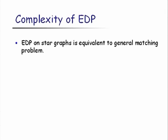There is a long and rich history of results on this problem. Let me review some classical results. Even the EDP problem on star graphs, which are trees of height 1 where a single vertex is connected to other vertices by direct edges, is equivalent to the general matching problem. We know how to solve matching in polynomial time, but that's non-trivial. So EDP captures this very naturally.